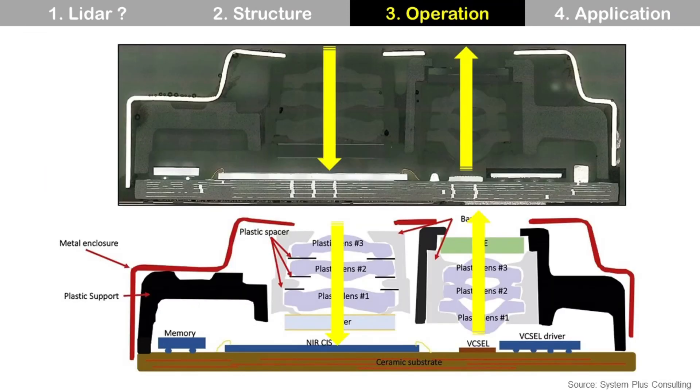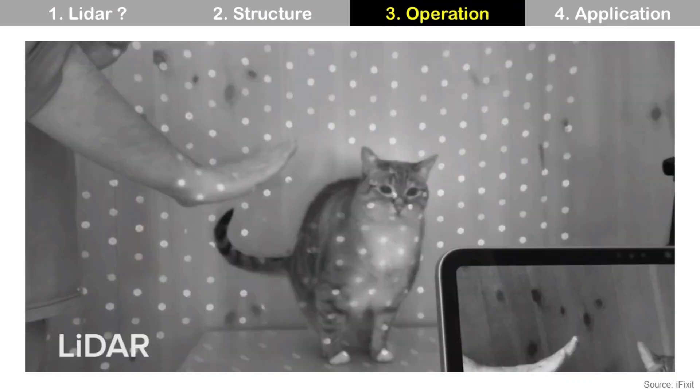You can see how it looks in a real LiDAR module. If you use an IR camera, you can see the IR dot matrix like this.